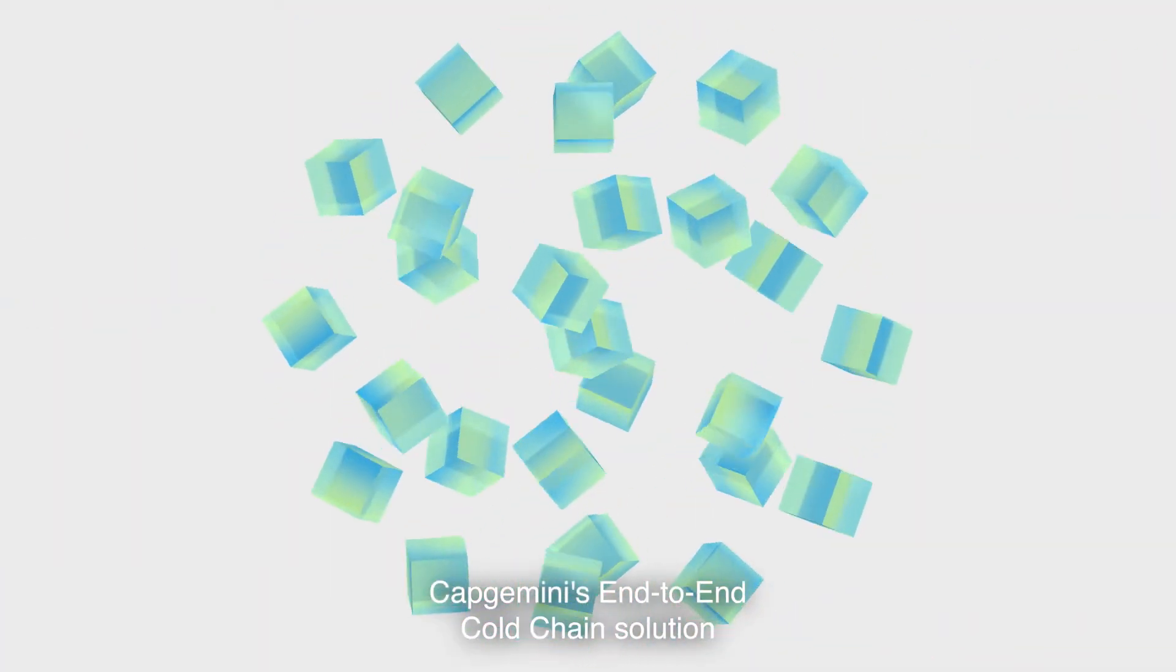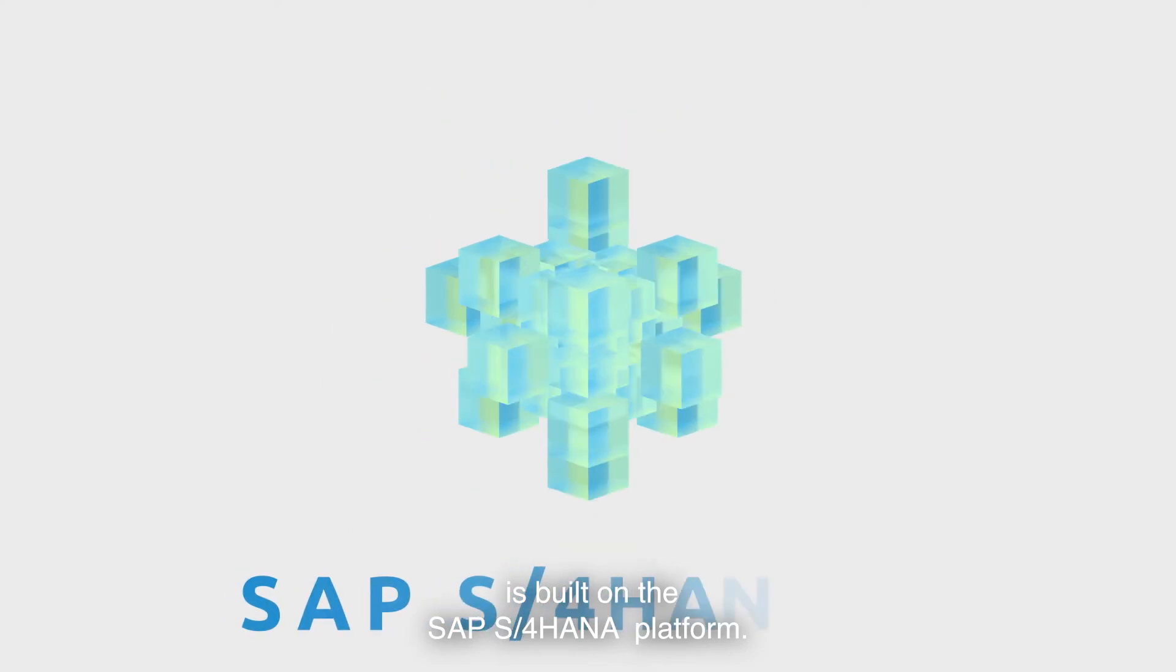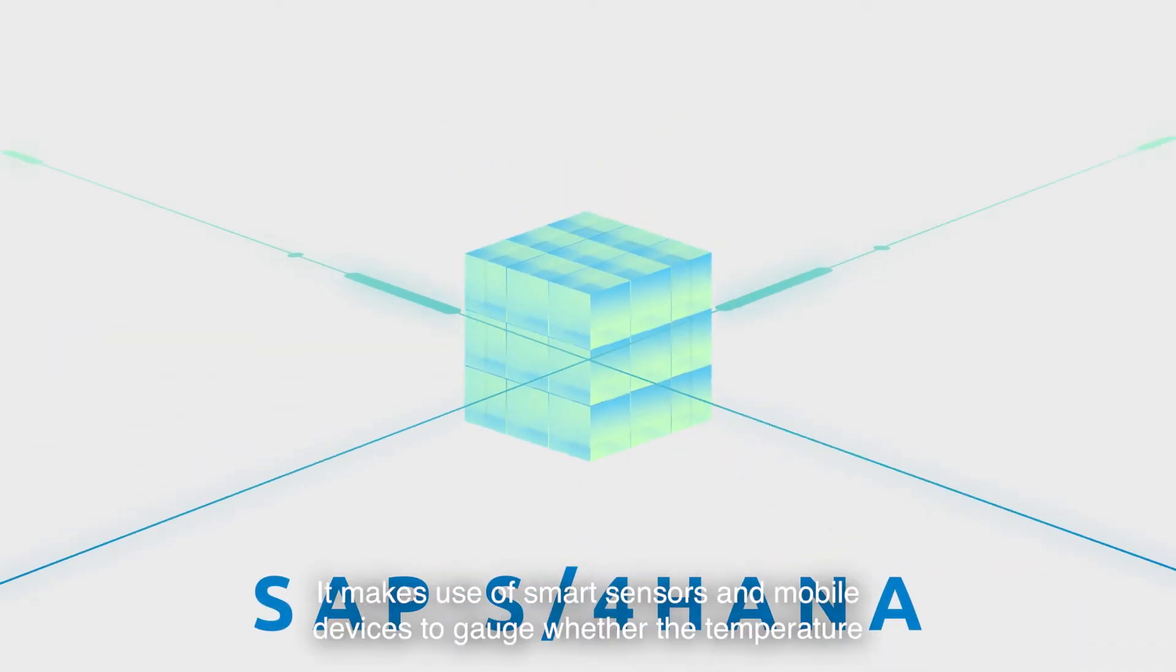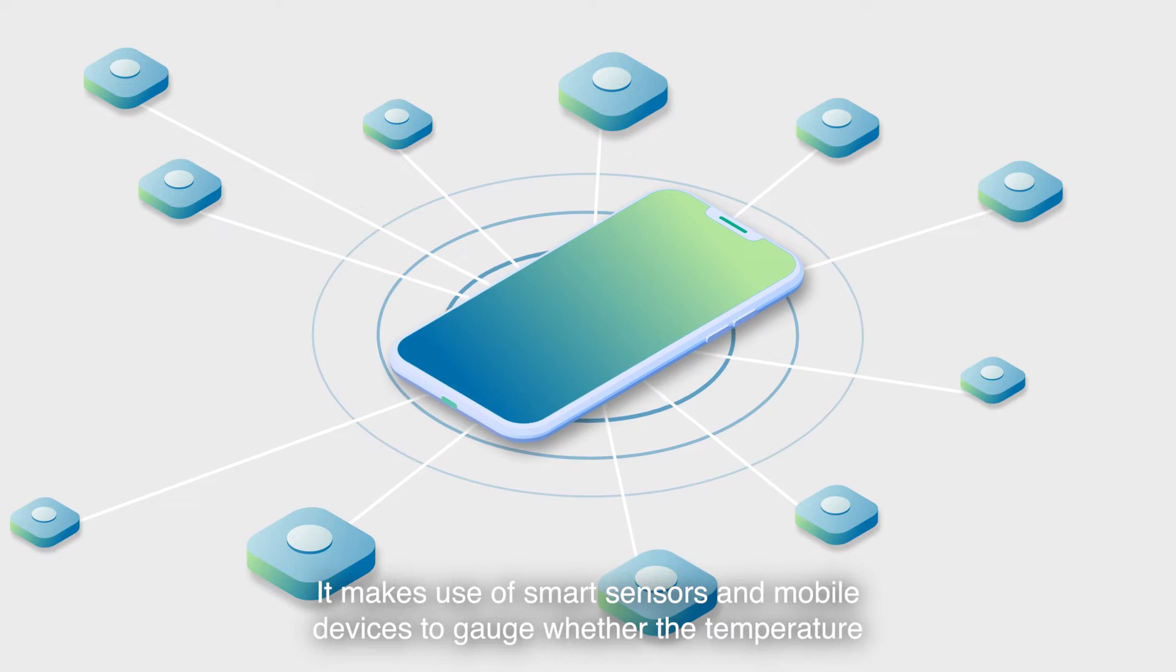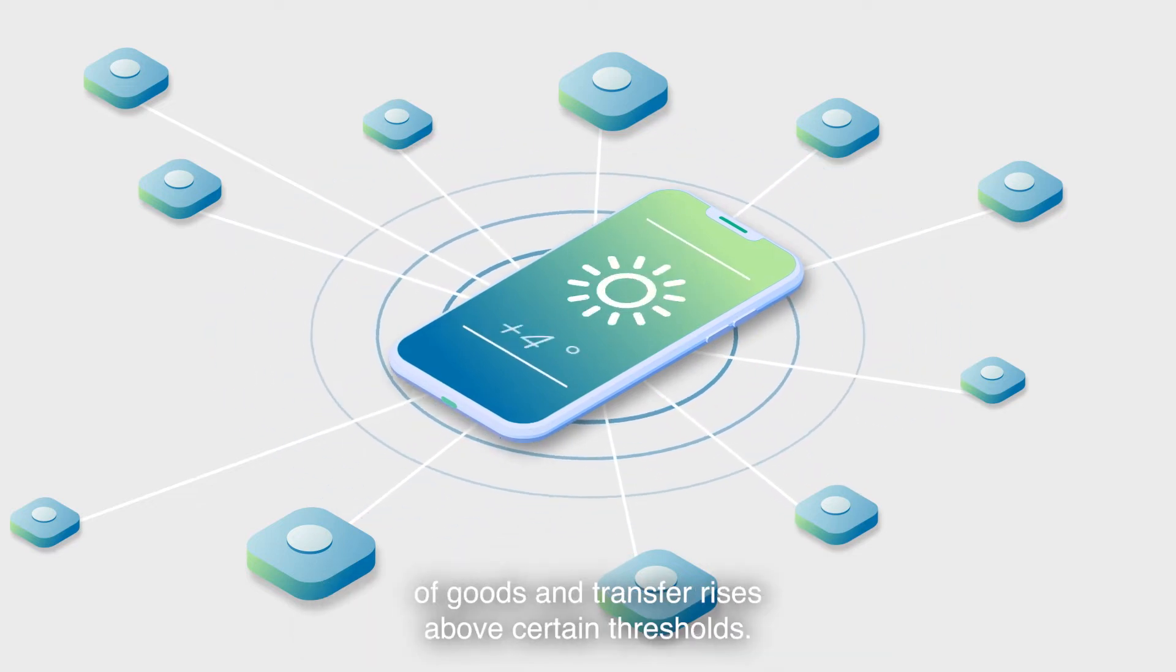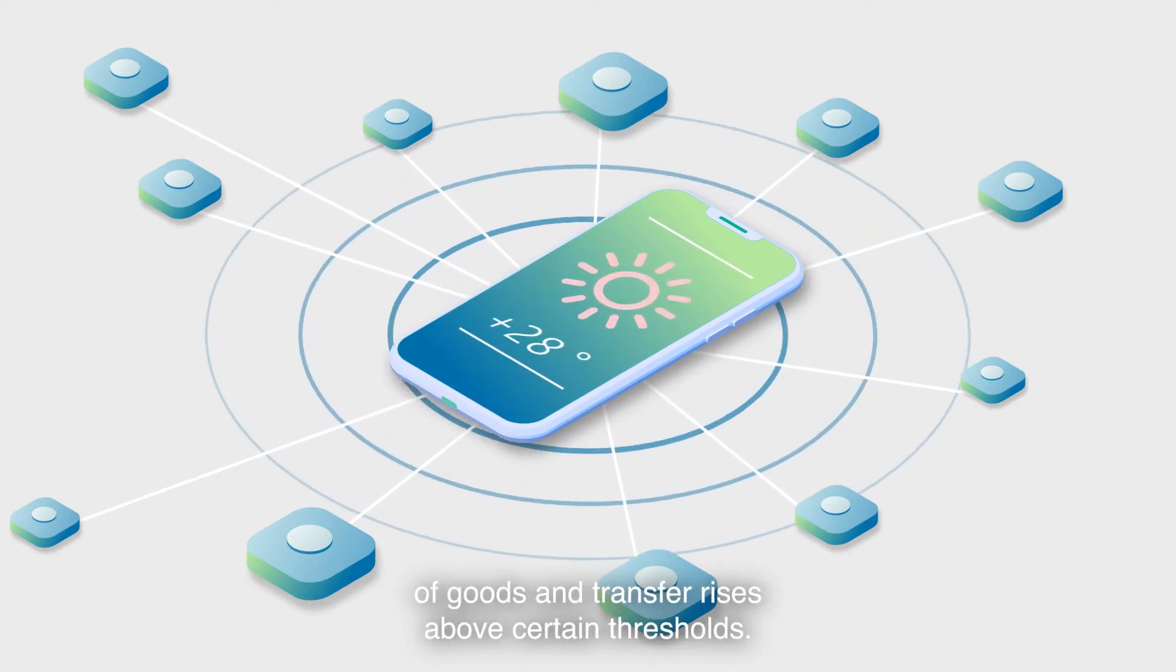Capgemini's end-to-end cold chain solution is built on the SAP S4 HANA platform. It makes use of smart sensors and mobile devices to gauge whether the temperature of goods in transfer rises above certain thresholds.